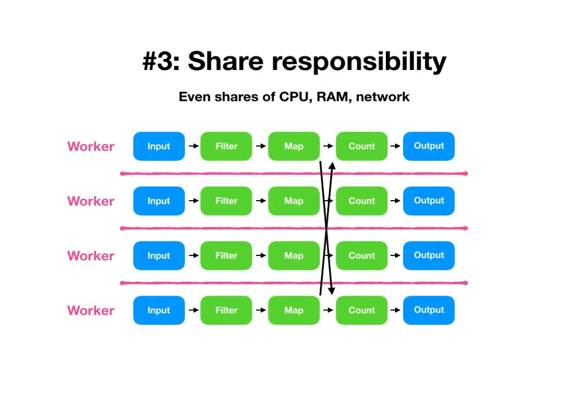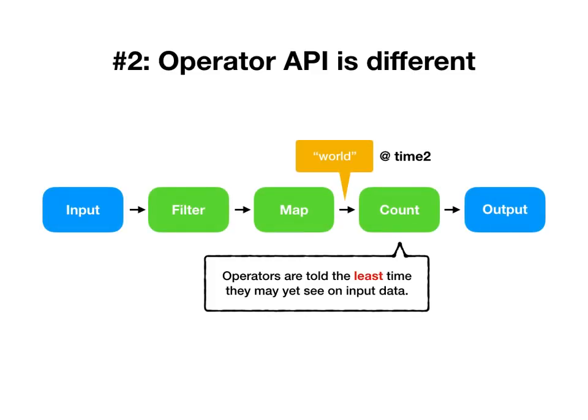One appealing property is that it gives out even shares of CPU, RAM, and network, so workers that all have the same resources can give all of their CPU to filter and map and all of their memory to count, without needing to pick specialized machines to handle those operators. The other appealing property is that each worker has a large view of the dataflow graph, and we'll see in just a moment that this is really helpful for improving the way these workers coordinate.